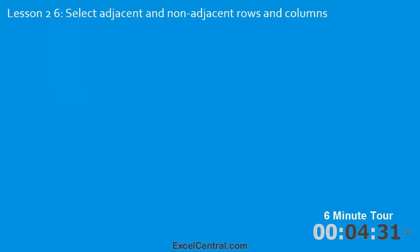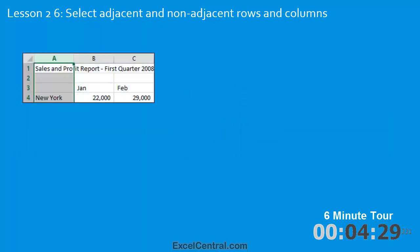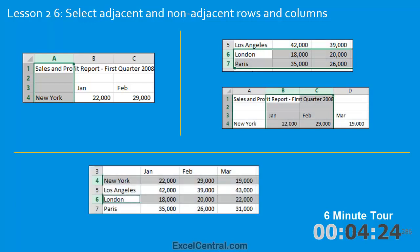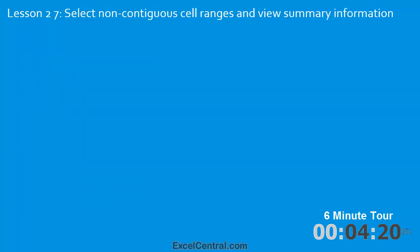In the sixth lesson you'll begin by selecting a single column, then two rows and two columns, and finally two non-adjacent rows — that is, rows that are not side by side.